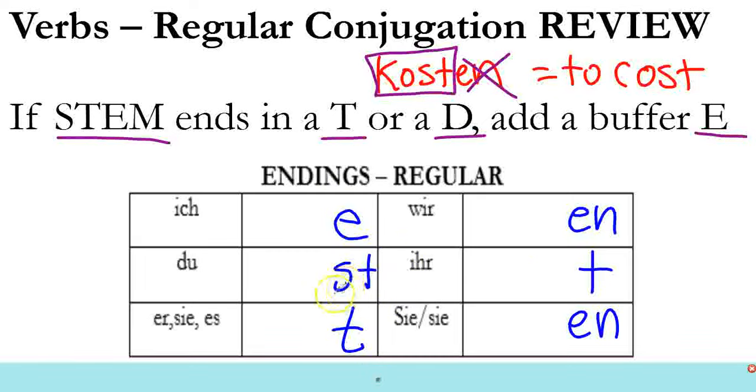If we have a verb like 'kosten', you can say 'ich koste'. But that just ends in an N. But if we need to say 'you cost', which is also weird - you wouldn't say 'I cost' or 'you cost' - because it ends in a T, we need to add a buffer E. So: ich koste, du kostest...